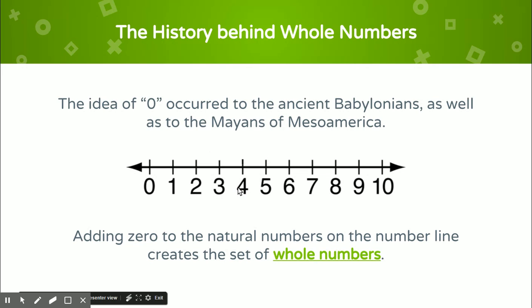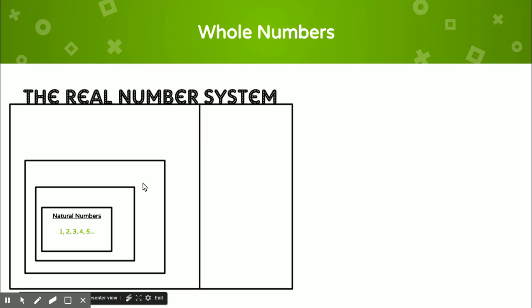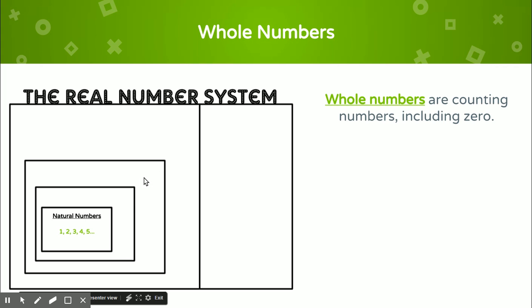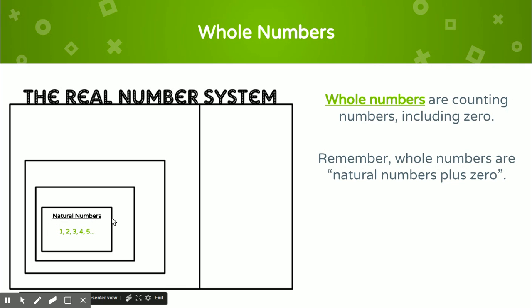Now let's talk about whole numbers. The idea of zero occurred to the ancient Babylonians as well as to the Mayans of Mesoamerica. Adding zero to the natural numbers on the number line creates the set of whole numbers. So now we don't just have numbers from one and up — we now have zero and up. Whole numbers are counting numbers but also include zero. The song says whole numbers are natural numbers plus zero. In the graphic organizer, whole numbers go on the outside, around natural numbers, because natural numbers are whole numbers.